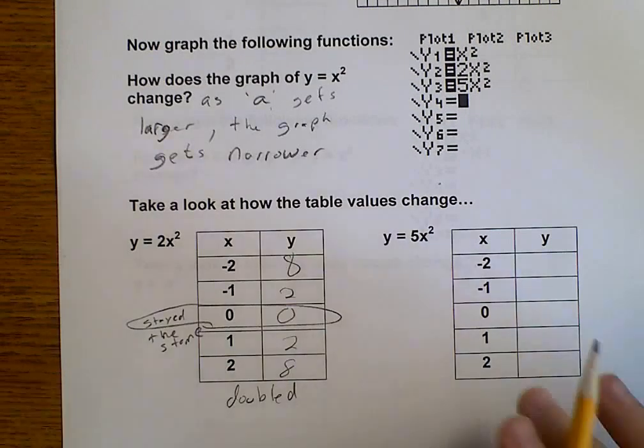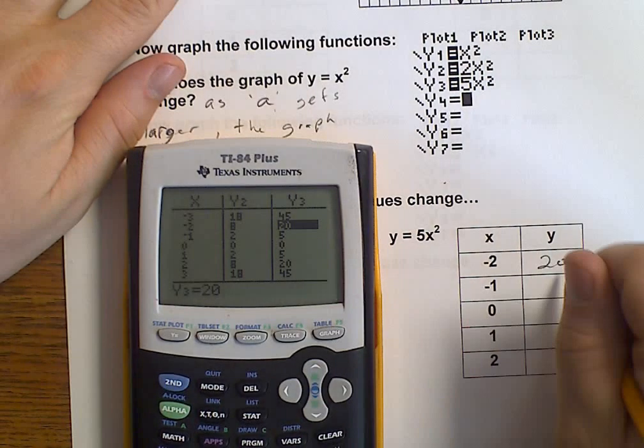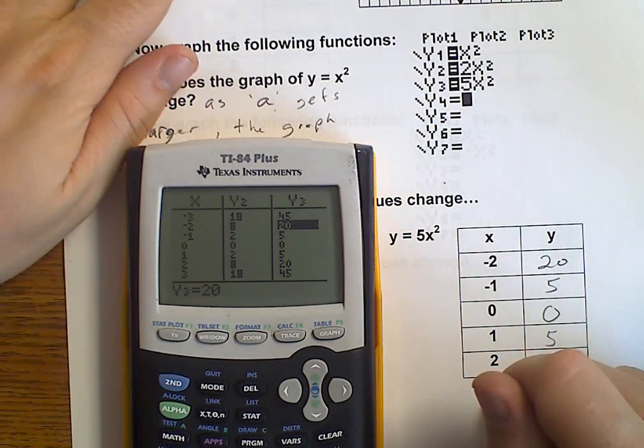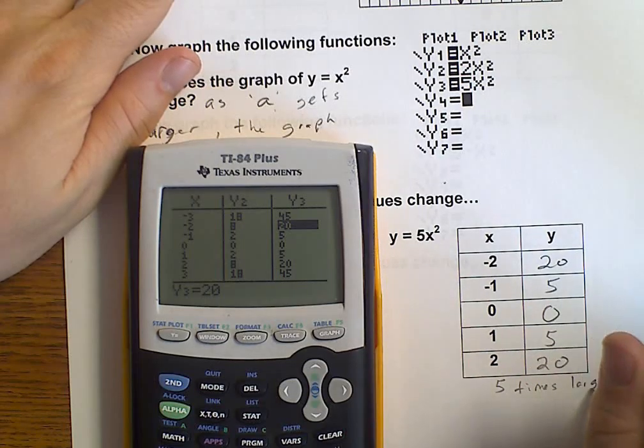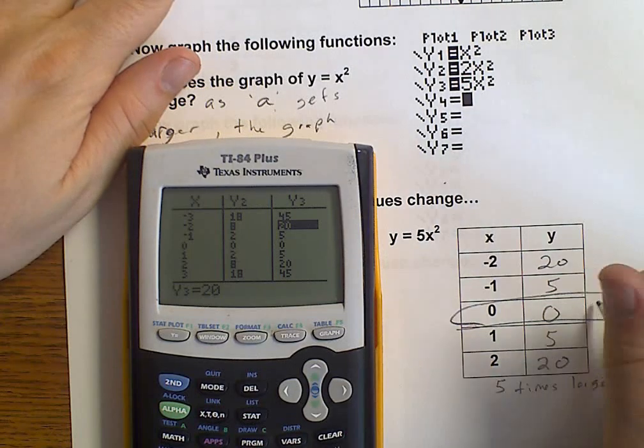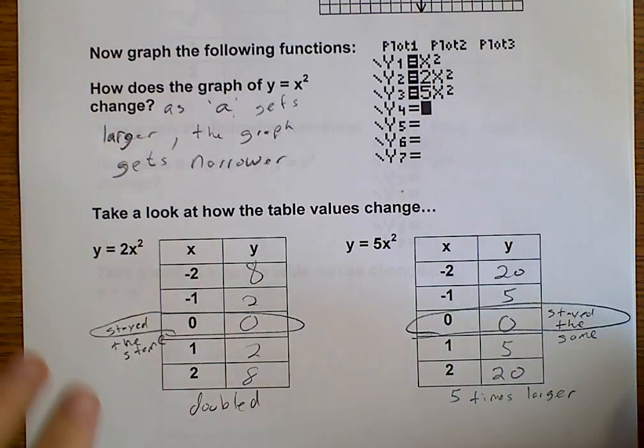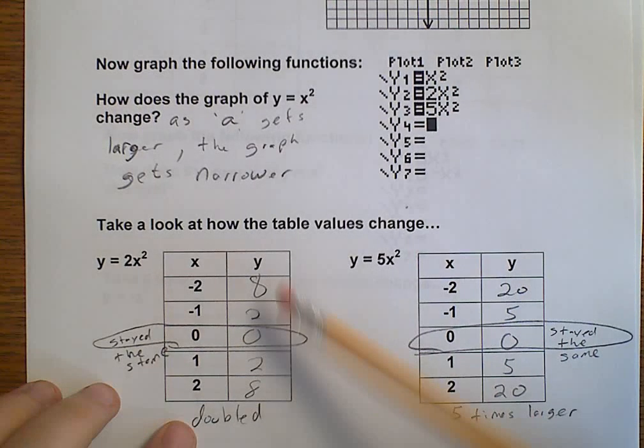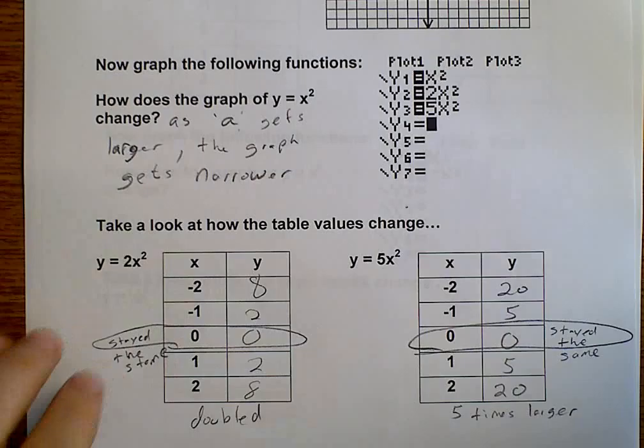I want you to know how the values all doubled. And that one stayed the same. All right? We look over here. This would be y3. Negative 2 is at 20, 5, 0, 5, and 20. I want you to notice how values are 5 times larger. And again, that one stayed the same. So, when we multiply, as we get larger numbers, our graph gets narrower, and we basically, here I did times 2, which was 2, and times 5, which was times 5. Simple enough here, as far as what needs to happen.